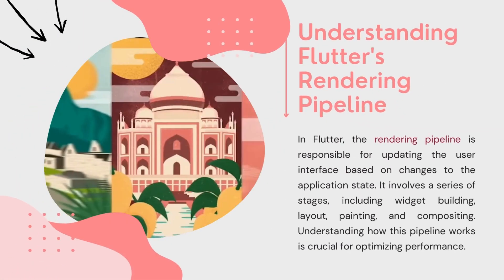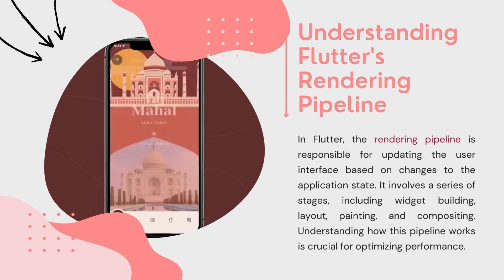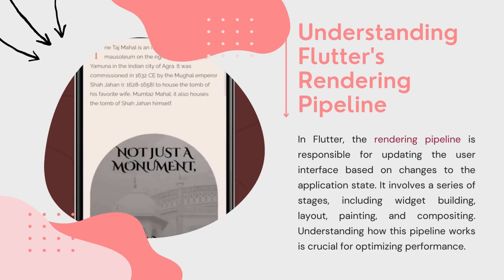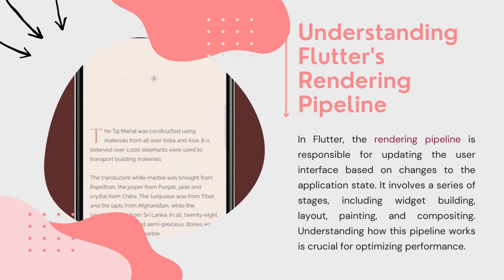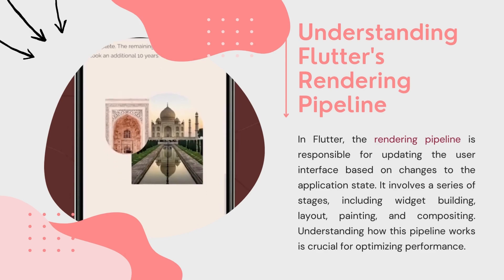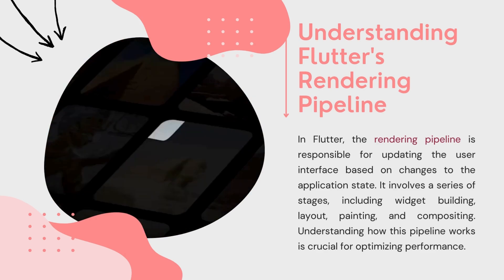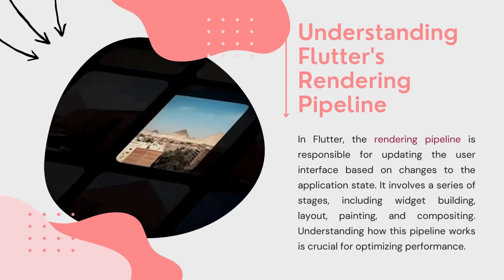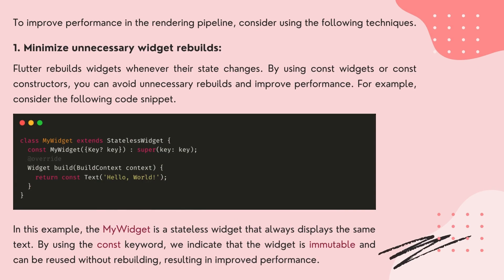Understanding Flutter's rendering pipeline. In Flutter, the rendering pipeline is responsible for updating the user interface based on changes to the application state. It involves a series of stages, including widget building, layout, painting, and compositing. Understanding how this pipeline works is crucial for optimizing performance. To improve performance in the rendering pipeline, consider using the following techniques.